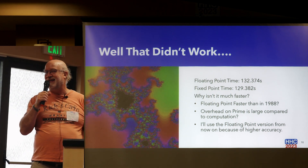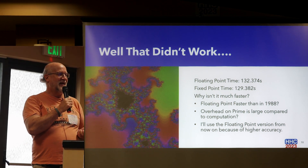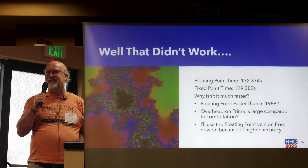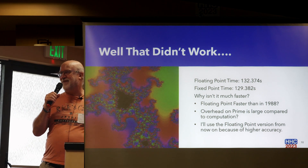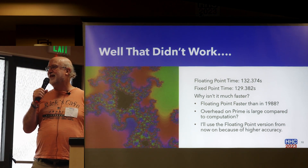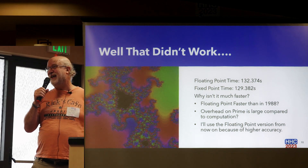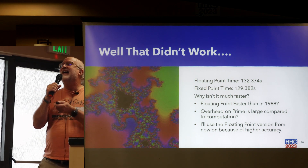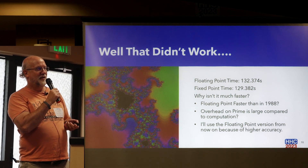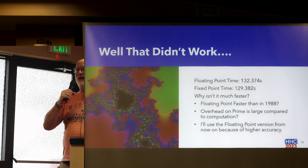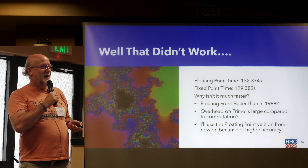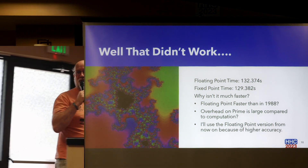What happened? Because this was a huge improvement in the 80s. Well, floating point has gotten a whole lot faster. On my original PC, floating point was done in software — I eventually bought a 287 co-processor. Those floating point instructions weren't built in until the 486DX. Also, on the Prime, the overhead of going through the loop and interpreting data may actually take longer than doing the computations themselves.